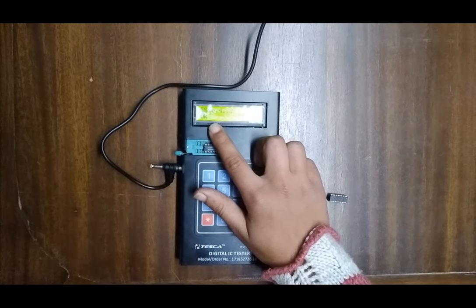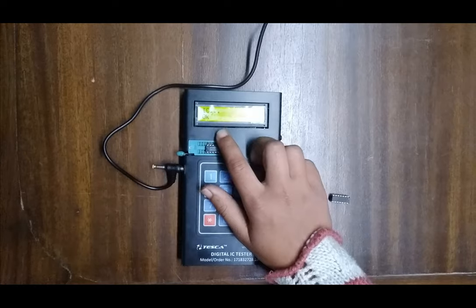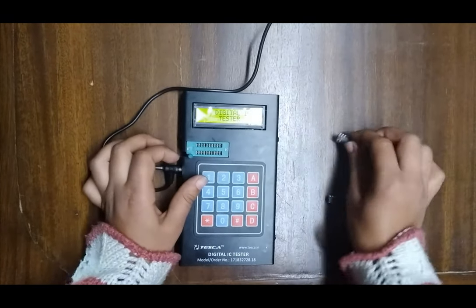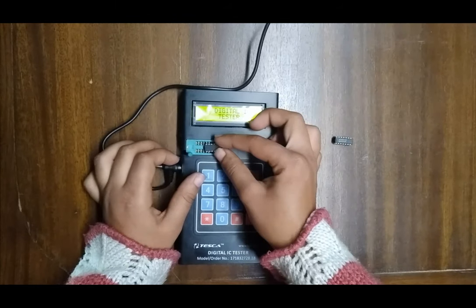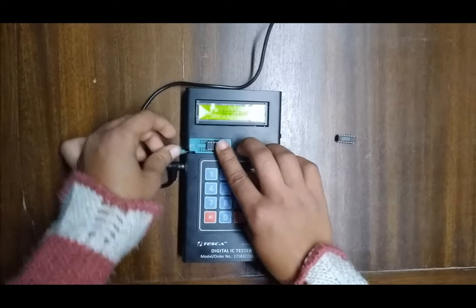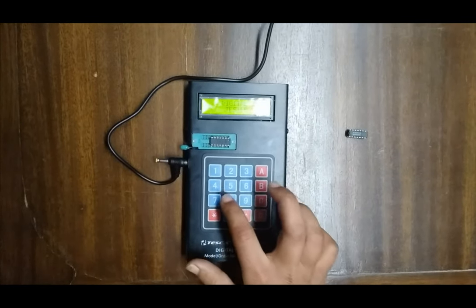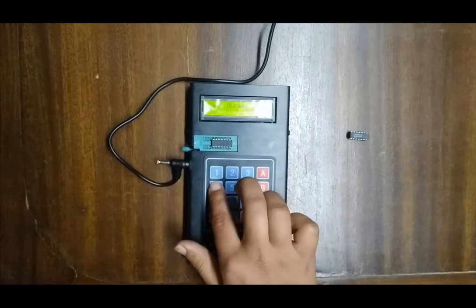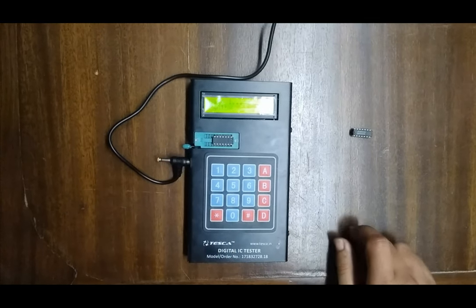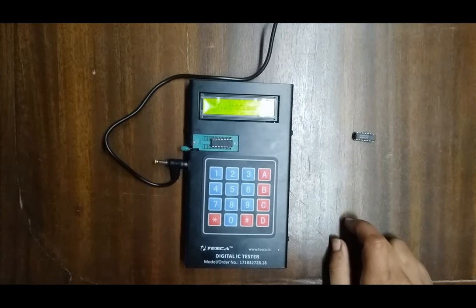Now removing this NAND gate IC and inserting the 7404 IC. Pressing the knob and entering the IC number 7404. It shows Gate 1 is faulty.